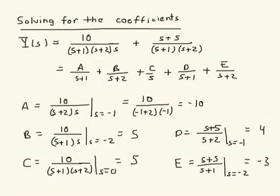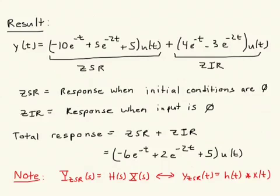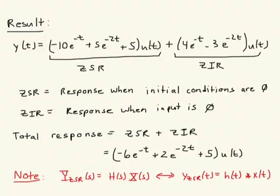Once we have the coefficients, it's straightforward to plug in and see what the final answer looks like. Plugging in the coefficients, the final answer is y(t) = [−10·e^(−t) + 5·e^(−2t) + 5]·u(t) for the ZSR, and [4·e^(−t) − 3·e^(−2t)]·u(t) for the ZIR. The ZSR is the response when initial conditions are zero, and the ZIR is the response when the input is zero. The total response equals ZSR + ZIR: y(t) = [−6·e^(−t) + 2·e^(−2t) + 5]·u(t).